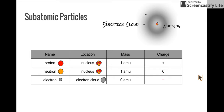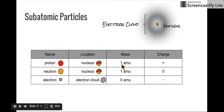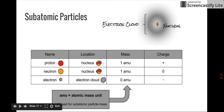Now let's talk about subatomic particles in more depth. You may want to pause the video to write this table down. Protons and neutrons are found inside the nucleus; electrons are found outside in the electron cloud. Protons and neutrons each have a mass of one AMU. AMU stands for atomic mass unit — scientists defined it so that one proton equals one AMU, and neutrons weigh about the same, so they are also called one AMU each.